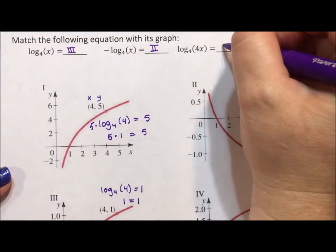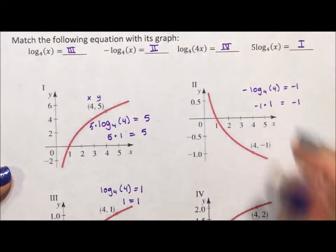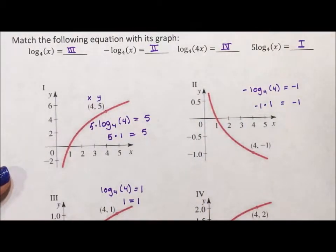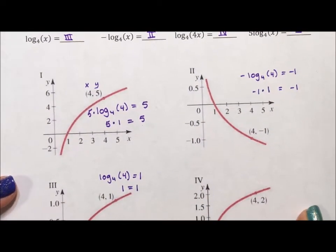And by process of elimination, this has to be 4. But let's test this one out because this one's a little bit different. So if we test this one out, we have log base 4 of 4 equals 2, which is 1 equals 2, which means 2 times, but none of these are 2 times.